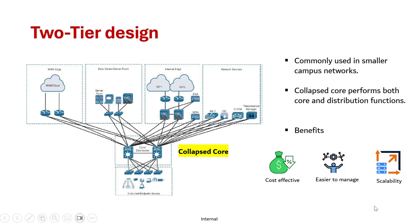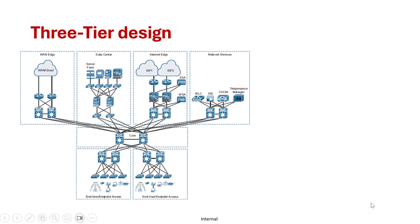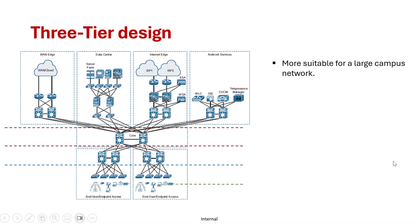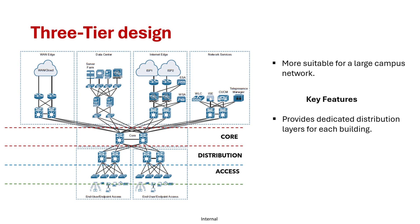Moving on to the three-tier design option — this model is more suitable for larger campus networks. It is one of the oldest and most classic network models, including three layers: the core layer, distribution layer, and access layer, each serving a specific purpose to optimize performance and scalability. In large enterprises the network is spread geographically across multiple buildings or a large area, and this design provides a dedicated distribution layer for each building.